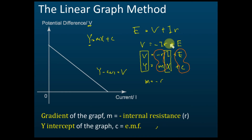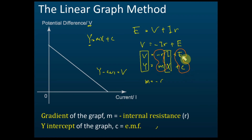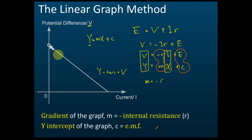So by rewriting the equation so that the vertical axis is potential difference and the horizontal axis is current, and comparing with y = mx + c, we find: gradient = negative internal resistance, and y-intercept = EMF. Note that the graph has a negative gradient.